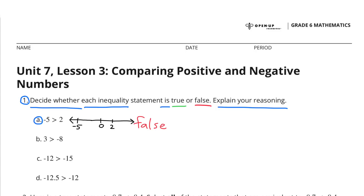A. Negative 5 is greater than 2. That's false. On the number line, negative 5 is 5 units to the left of 0, and positive 2 is 2 units to the right of 0. The further to the left, the smaller the number's value. So 2 is actually greater than negative 5.